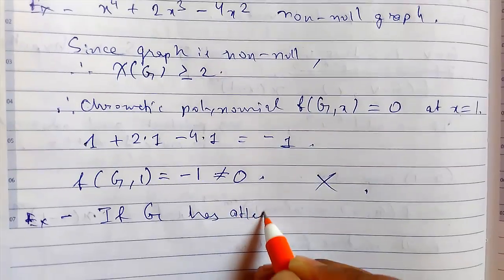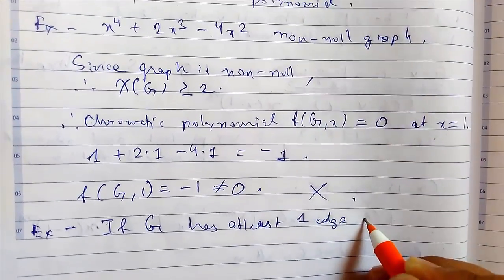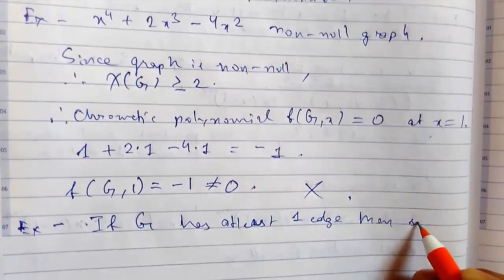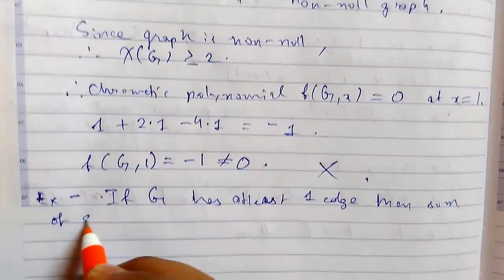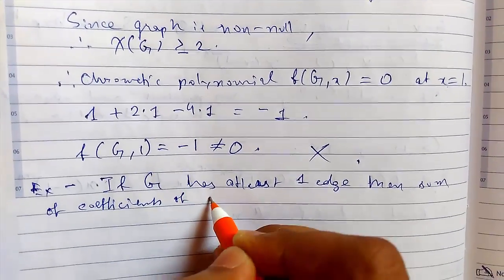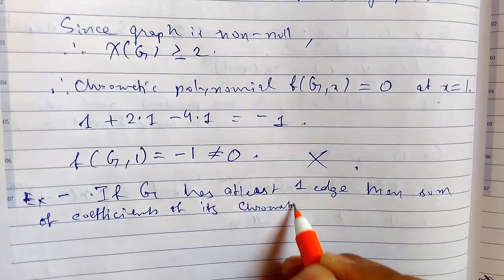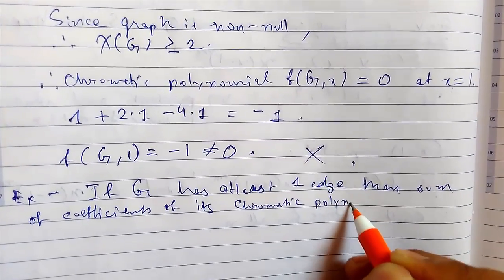One edge, so it is a pendant edge, so then we need to prove that sum of coefficients of its chromatic polynomial is 0.